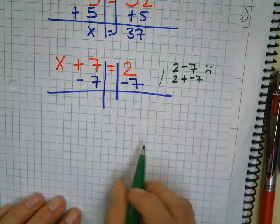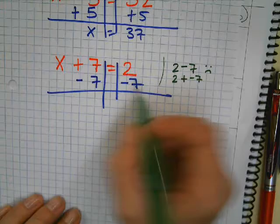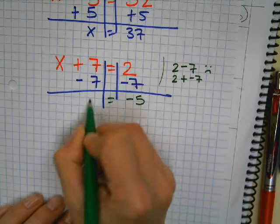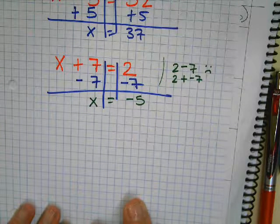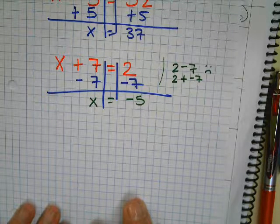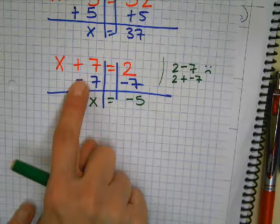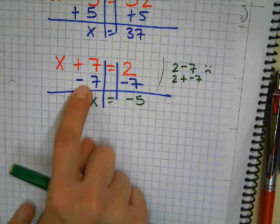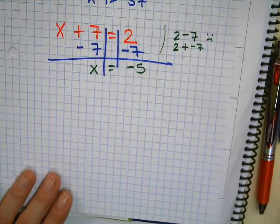So, 2 plus negative 7. What's 2 plus negative 7? Negative 5 is equal to X. You got to be careful. You do the opposite, right? You do the opposite.